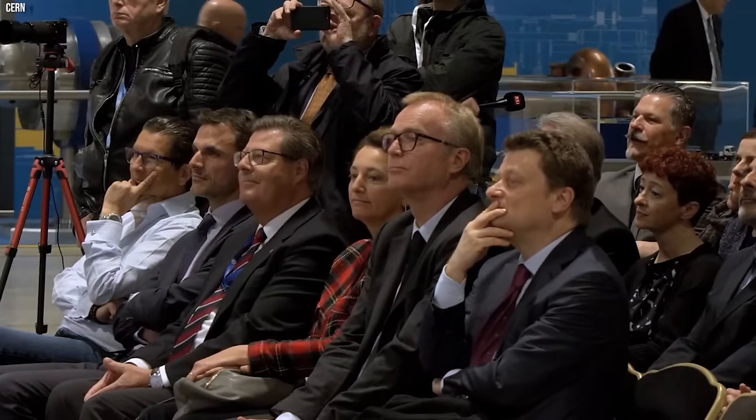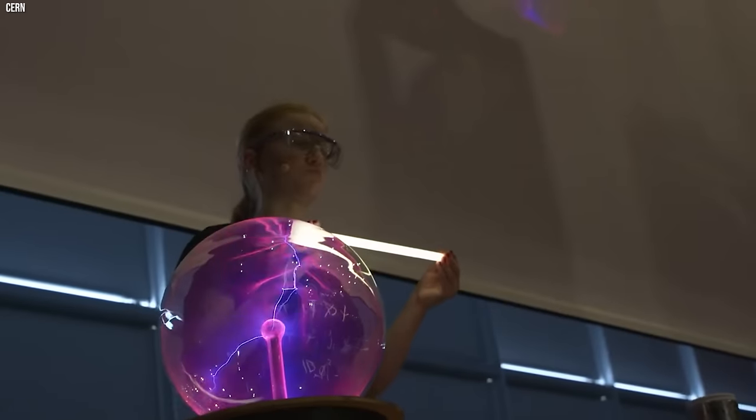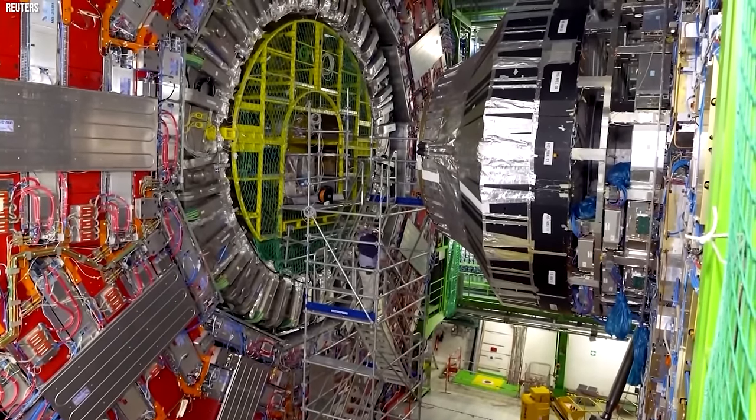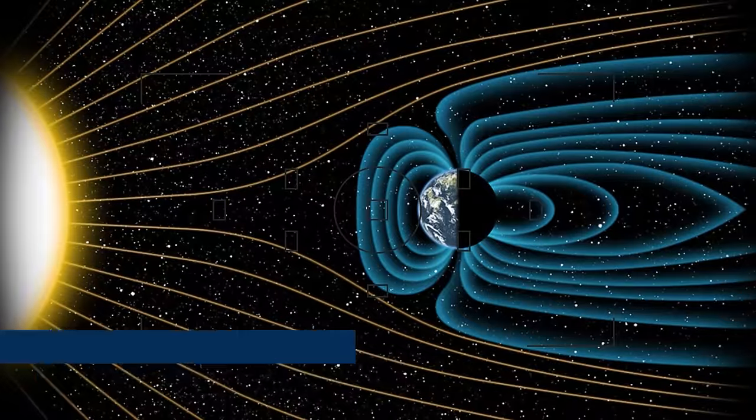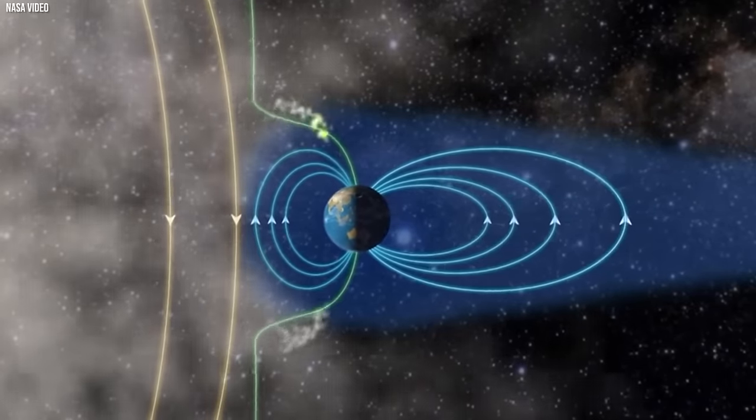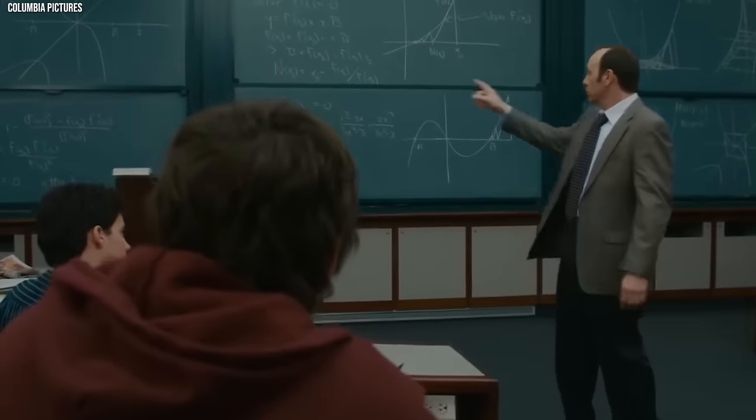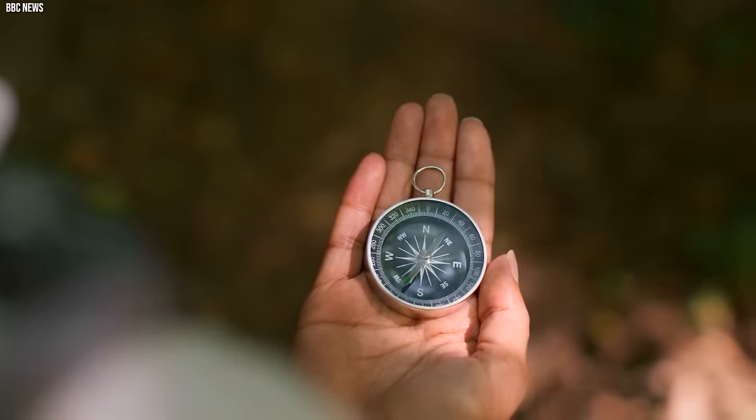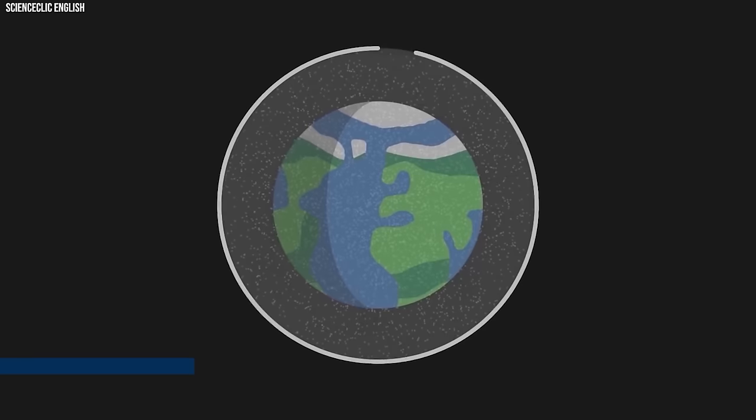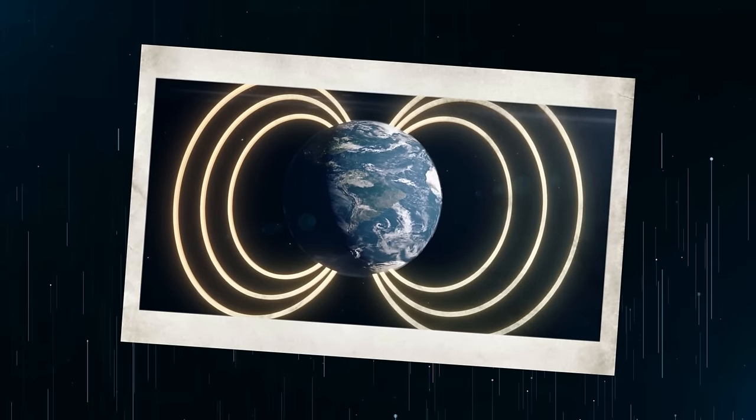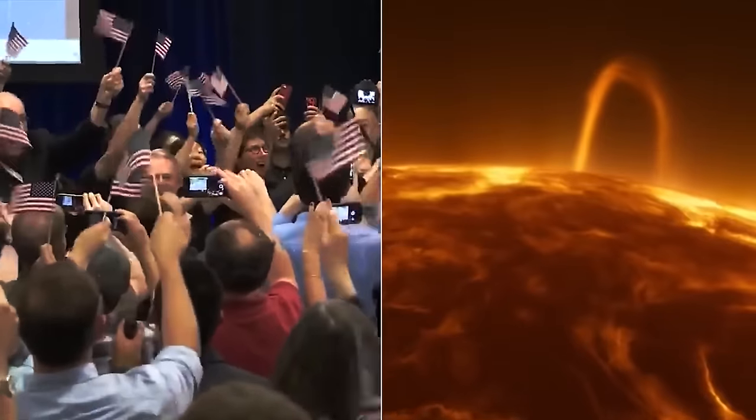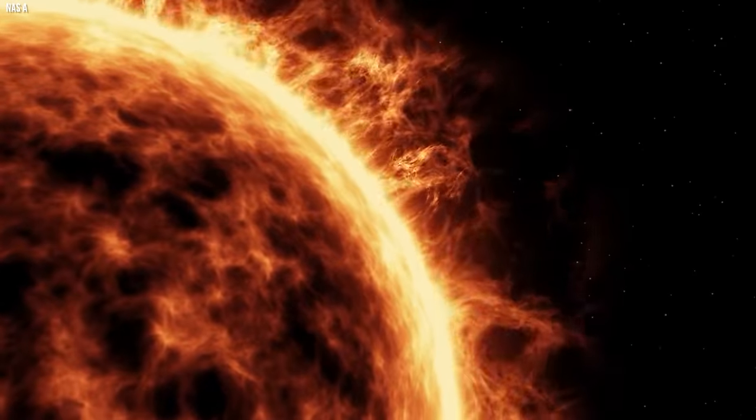However, scientists swiftly reassured the public that this rupture in Earth's magnetic field posed no immediate threat. Although open, it allowed the passage of particularly intense solar winds, a phenomenon observed occasionally and unrelated to the LHC experiments. Earth's magnetic field is a silent guardian, quietly working behind the scenes to safeguard our planet. Beyond merely orienting our compass needles, this magnetic shield plays a crucial role in maintaining life's habitability by deflecting potentially harmful solar winds that could otherwise jeopardize our ozone layer. NASA scientists emphasize the importance of studying solar winds, as these energetic outbursts have the potential to wreak havoc by damaging satellites and causing widespread power disruptions, leading to citywide blackouts.